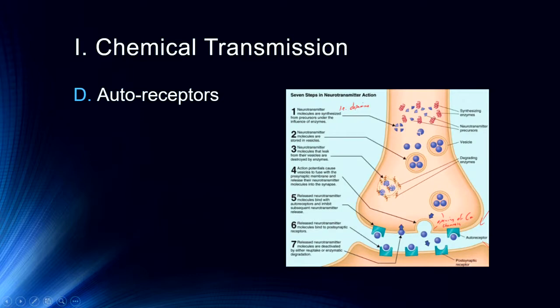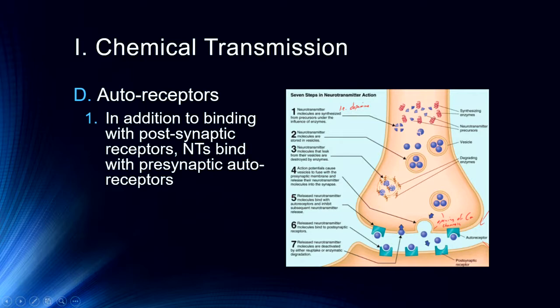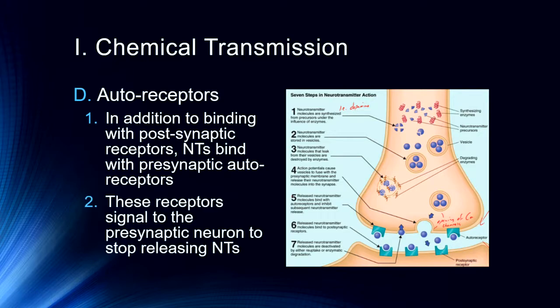Autoreceptors are an important part of understanding how neurons turn off the neurotransmitter process. Autoreceptors are on the presynaptic neuron. In addition to binding with postsynaptic receptors, neurotransmitters will bind to presynaptic autoreceptors. The function of these autoreceptors is to signal the presynaptic neuron to stop releasing neurotransmitters — basically shutting off exocytosis. This is how neural signals are turned on and off, and the first process in shutting down a neural signal is to stop release into the synapse via autoreceptors.